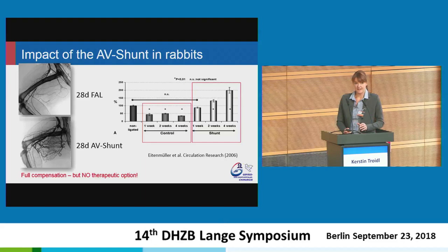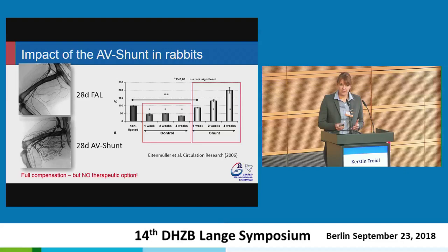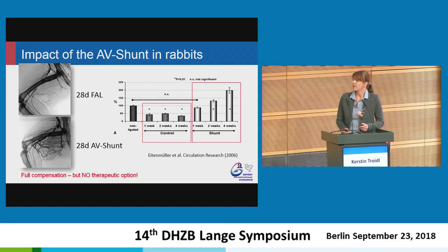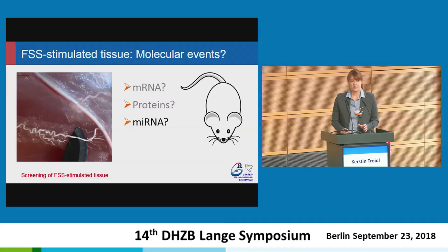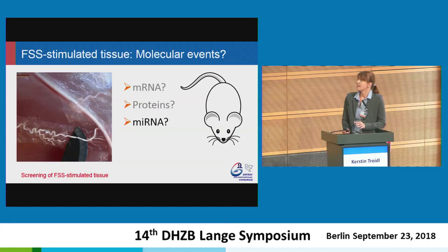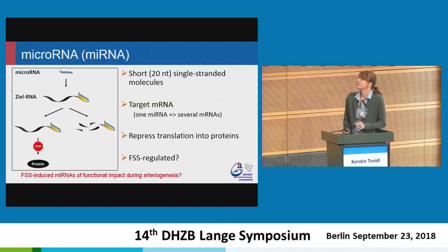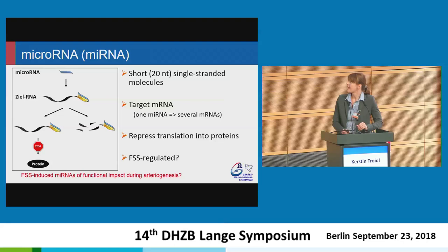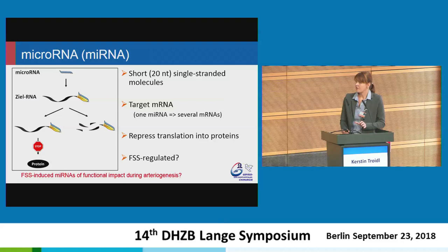We have shown that with this highly increased and permanent fluid shear stress we can reach full compensation, though this is not a therapeutic option. However, it allowed us to collect the fluid shear stress-stimulated tissue and investigate the molecular mechanisms. In different studies we have investigated mRNA, proteins, and our latest study is focused on microRNAs — short single-stranded RNA molecules that target mRNA. They are not translated into proteins but repress protein translation. Some are known to be fluid shear stress-regulated, so we asked whether there are fluid shear stress-induced microRNAs with functional impact during arteriogenesis.